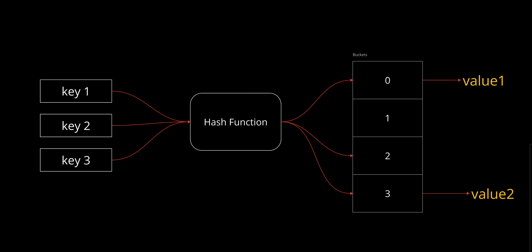Of course, no data structure is perfect, and hash indexes come with a few challenges. First, collisions — when two keys hash to the same index, you need a way to handle it. Common methods include chaining, storing multiple values in a linked list at the same bucket, or open addressing, finding another empty bucket. Second, hash function dependency — a poorly designed hash function can lead to uneven distribution, degrading performance from O(1) to O(n). Third, hash indexes do not maintain sorted data, making them not ideal for range queries.